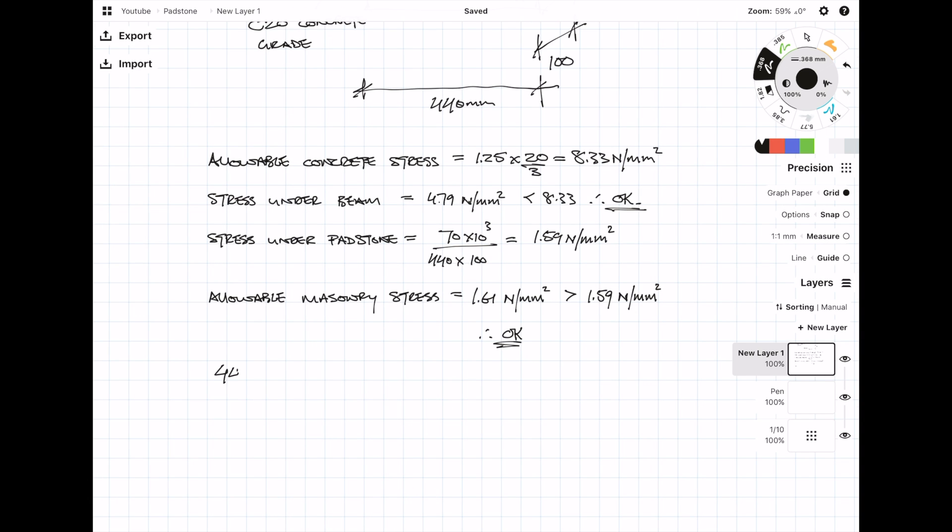So at the end of any calculation it's always nice to summarise what you're going to specify. In this case we're going to specify a 440 by 215 by 100 C20 padstone and the required bearing of the steel beam is going to be 100mm. Hopefully you found this video useful. Please remember to like and subscribe and I'll catch you on the next video. Cheers.